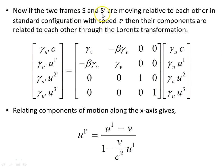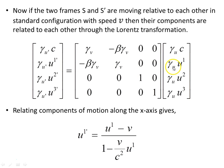If the two frames S and S prime are moving relative to each other in standard configuration with speed v, then their velocity components are related through the Lorentz transformation. The components of the observer in S and the components of the observer in S prime are related by the Lorentz transformation matrix for relative speed v. Performing this matrix multiplication — as shown in the previous video — we end up with the relationship that relates what the S prime observer sees to what the S observer sees, the relative speed v between the two frames, and how the two sets of components are connected.